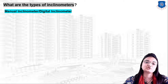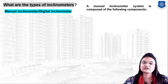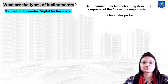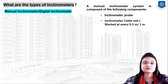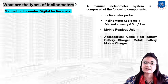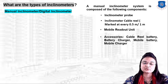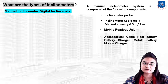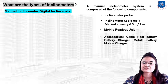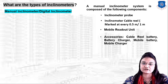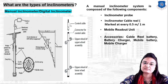The first type is the manual and digital inclinometer. It consists of the following components: an inclinometer probe, an inclinometer cable ring, a mobile readout unit, and accessories such as a cable rail, battery, battery charger, and mobile charger. Each inclinometer system requires a combination of equipment and sensor to monitor and collect data. The cable ring has marks at every 0.5 meter or one meter intervals.